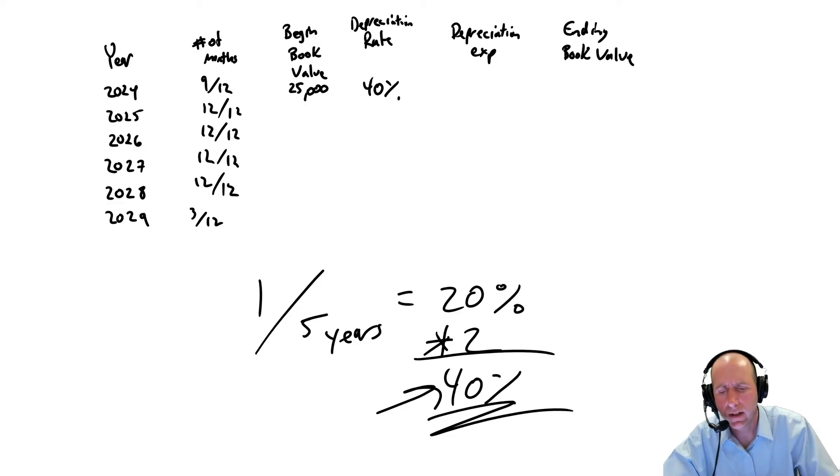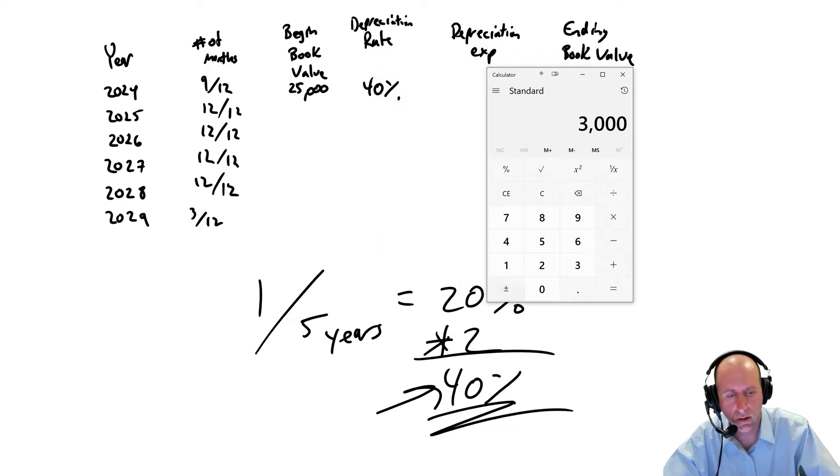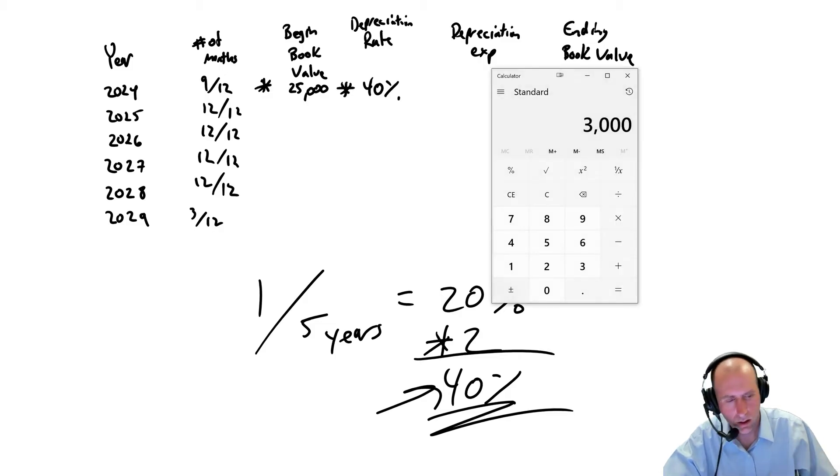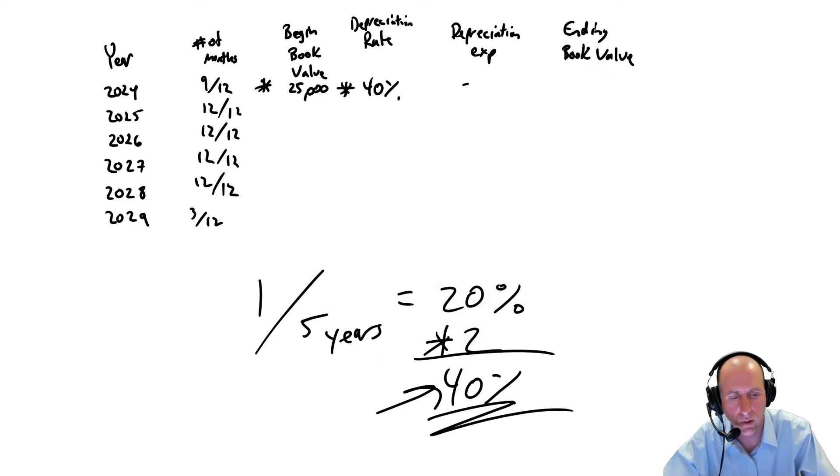It's just kind of arbitrary steps here. Number of years, five. You take one divided by the number of years, you get a percentage multiplied by two because this is accelerated, we're trying to depreciate this thing fast. So our depreciation rate, 40%. Let's do our first year's depreciation. All you do for depreciation expense is take these three first numbers, multiply them.